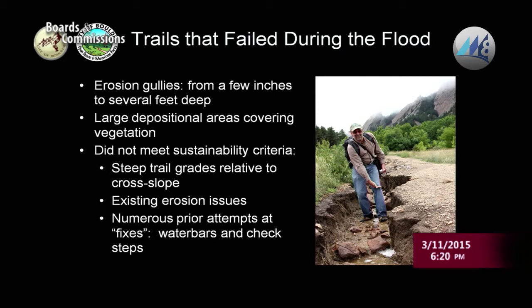Trails that failed during the flood — this photo is from the Chautauqua Trail. We saw erosion gullies from several inches to several feet deep, large depositional areas, and all that eroded material ended up covering vegetation on OSMP land. These trails didn't meet sustainability criteria because they have steep trail grades relative to the cross slope. They had existing erosion issues, and we had attempted numerous prior fixes with water bars and check stops trying to keep them functional.